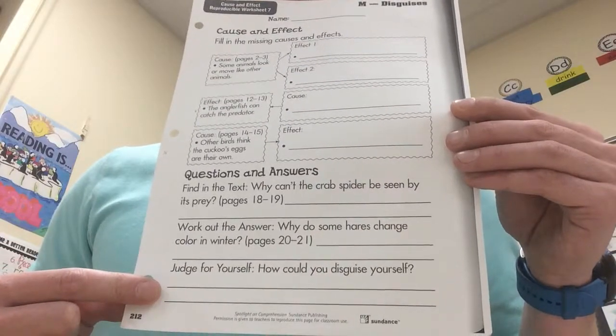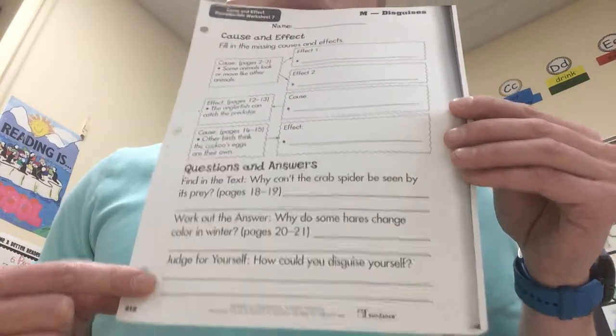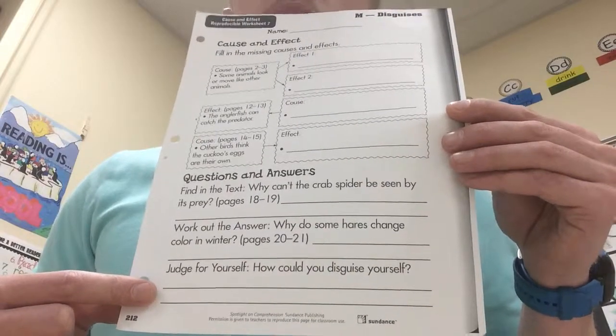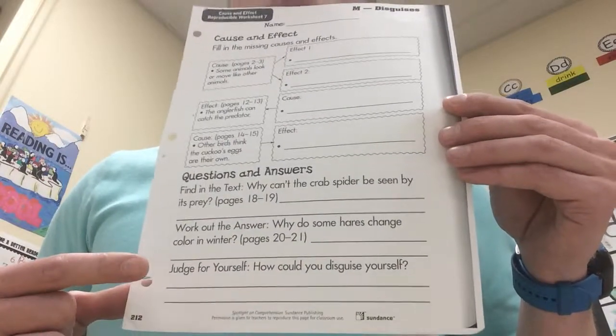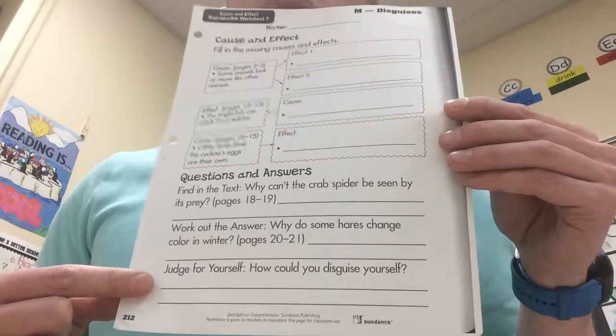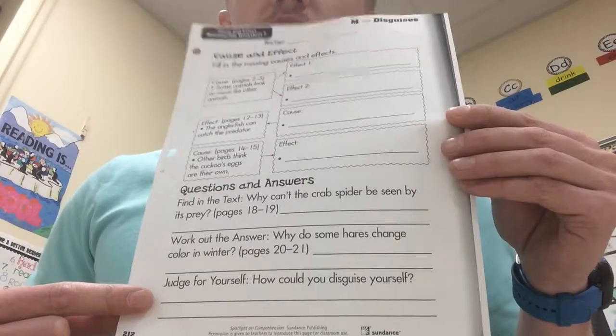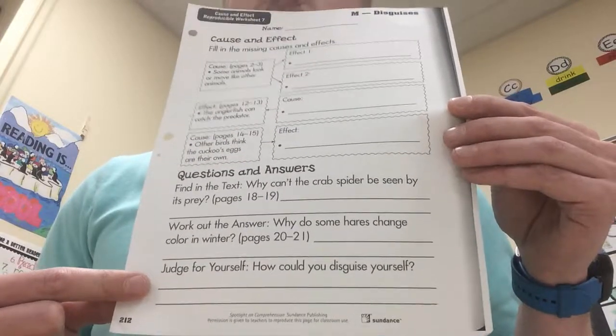And for the judge for yourself section, it is your opinion, but I want you to discuss it. How could you disguise yourself? You need to tell me not only how you would disguise yourself, but where would you be that you're choosing those things to disguise yourself.